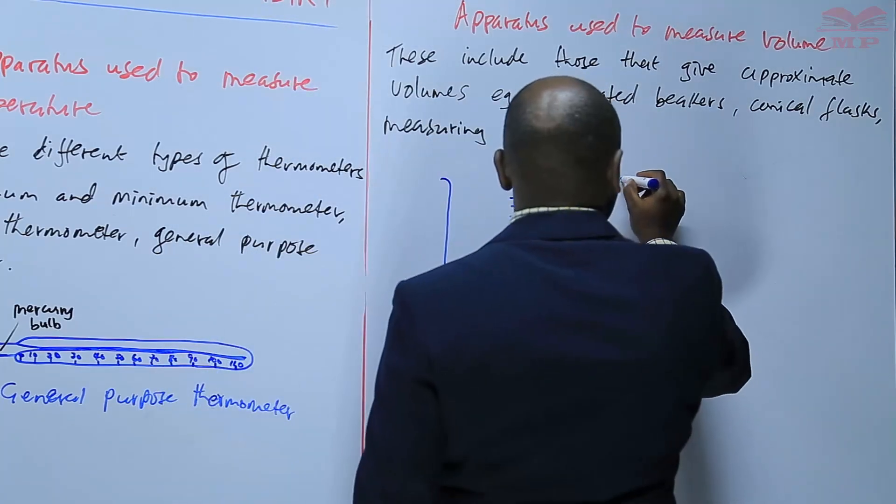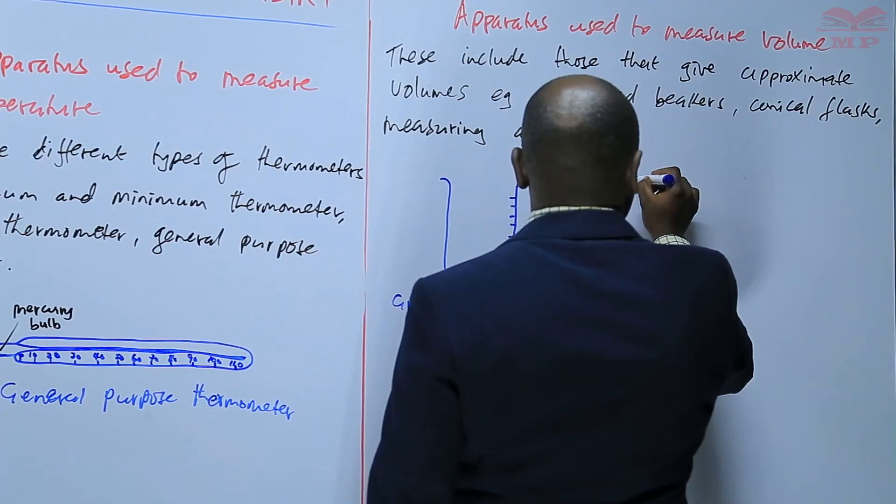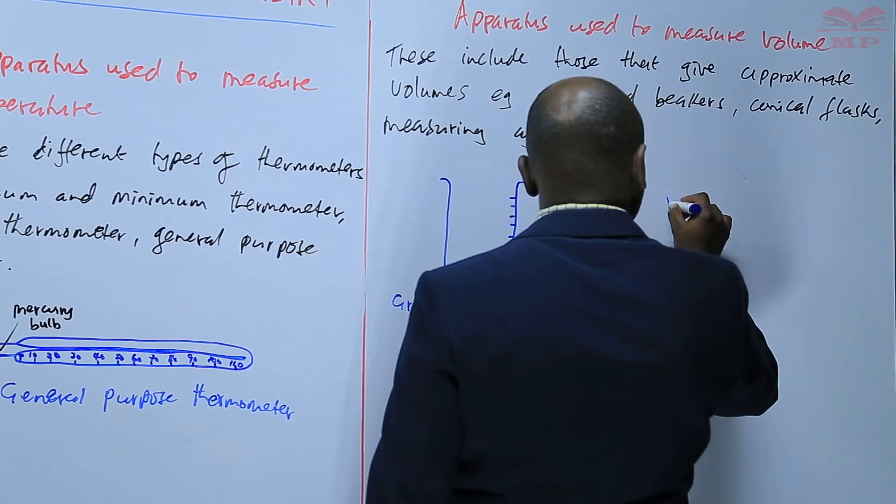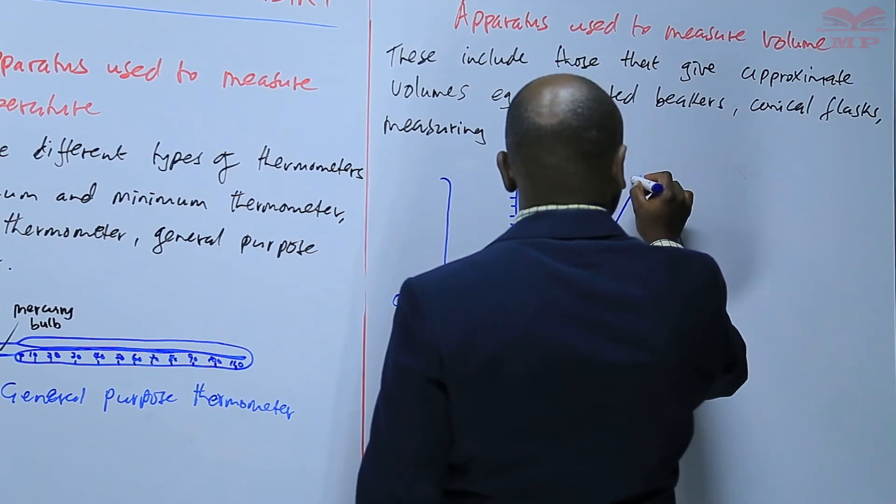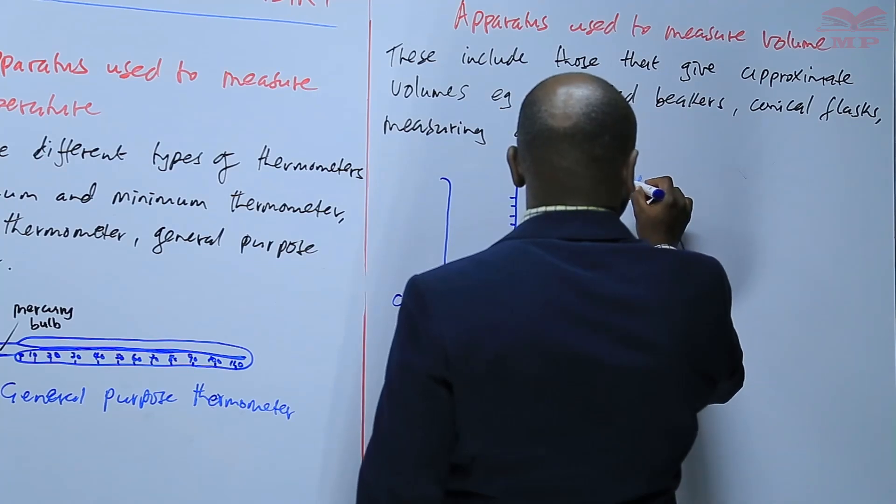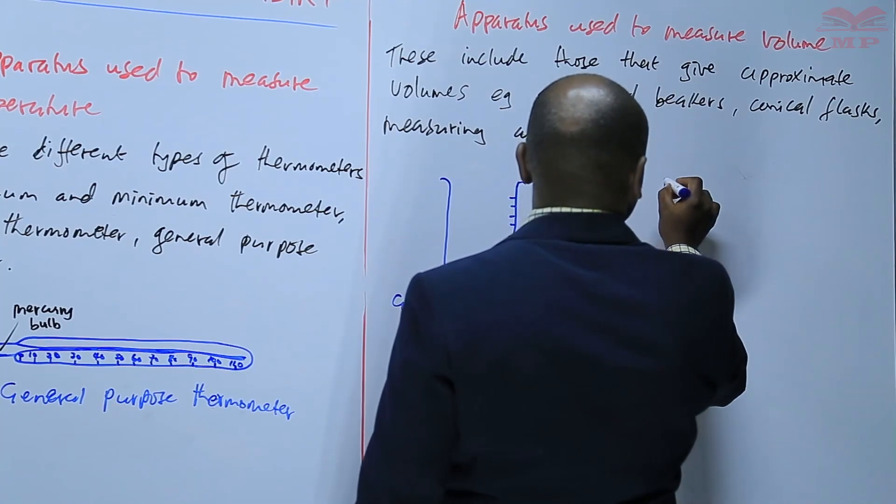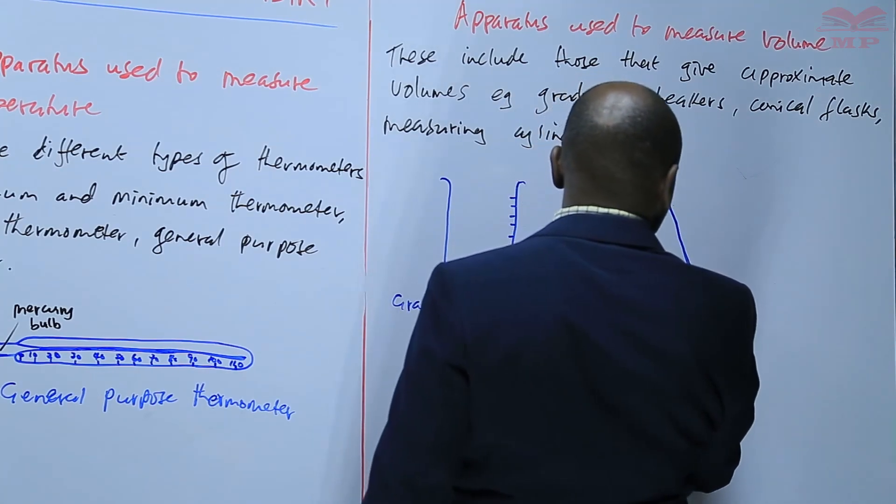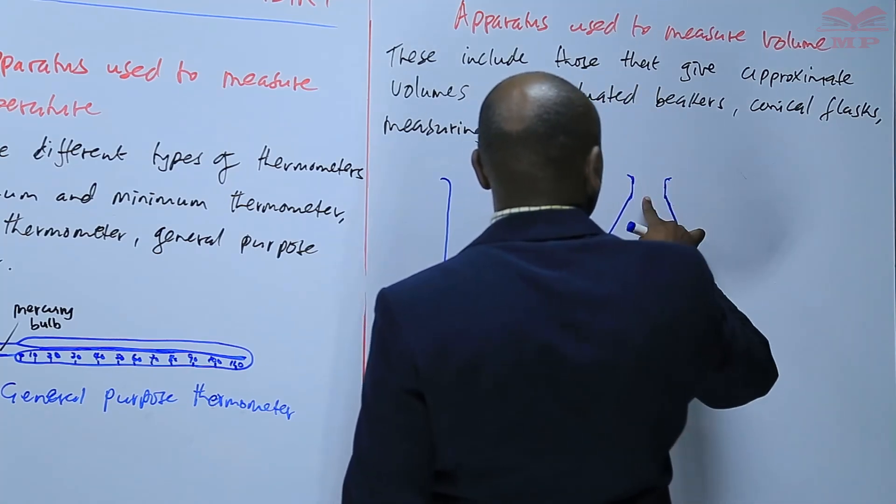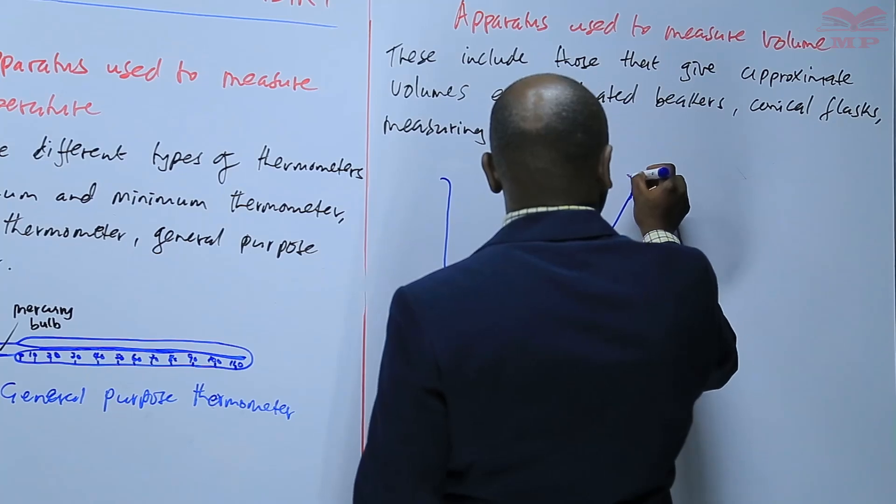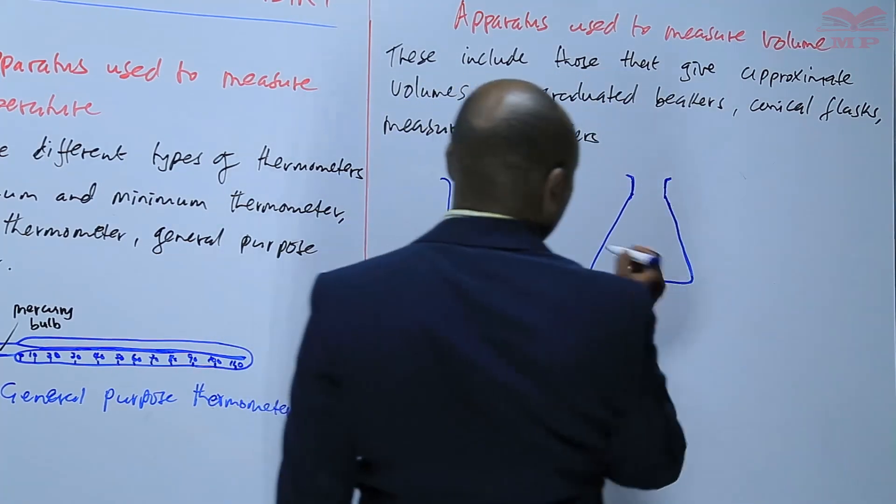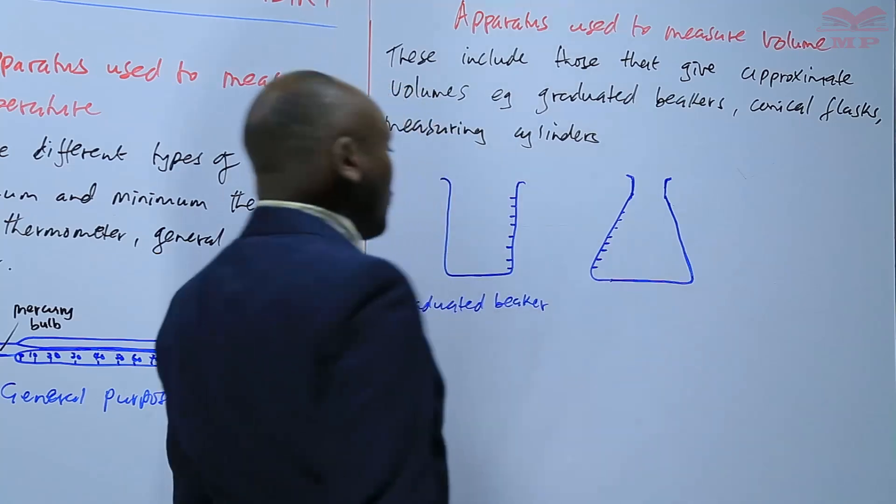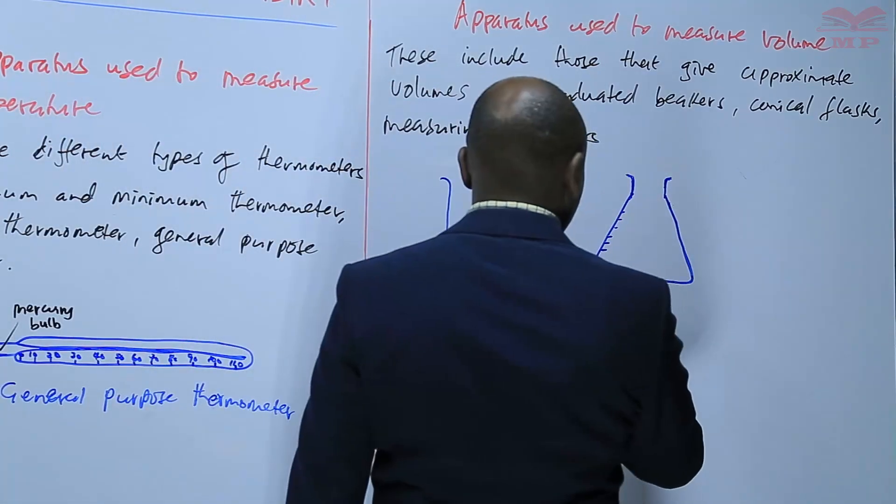We have conical flask. A conical flask is cone in shape, has the shape of a cone. So also the conical flask has some graduations and it can measure volume approximately.